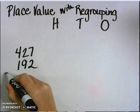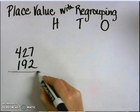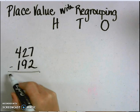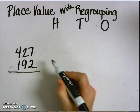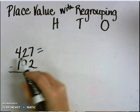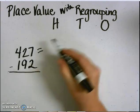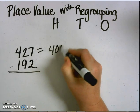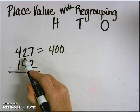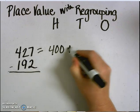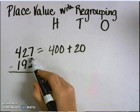To get started, I will break apart the number 427 by place value. There are four hundreds, or 400, two tens, or 20, and seven ones.